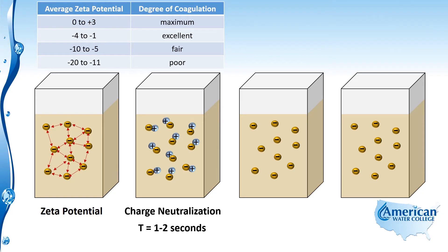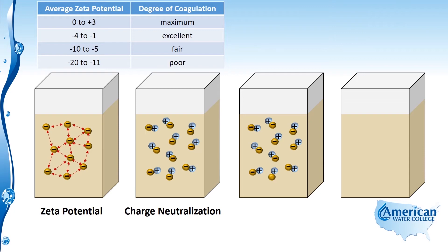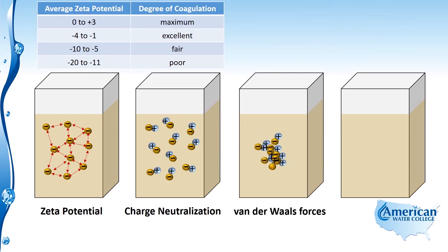Now that we've neutralized the charges, van der Waals forces come into effect. Van der Waals forces is the force between all objects that tries to pull them together. It's not until van der Waals forces overcomes the zeta potential that these colloids can come together and form a floc. By neutralizing the zeta potential, van der Waals forces can then go into effect and our micro floc can become macro floc.